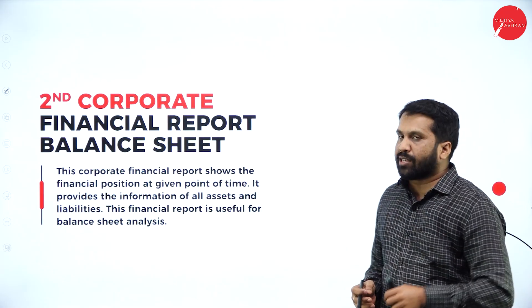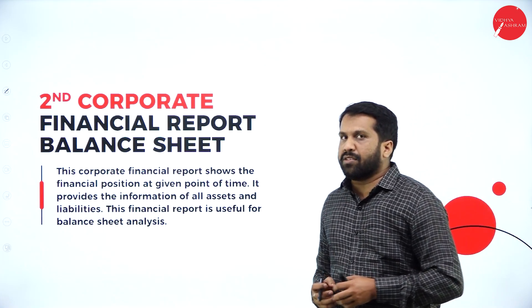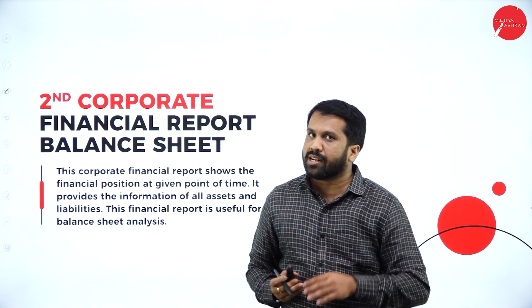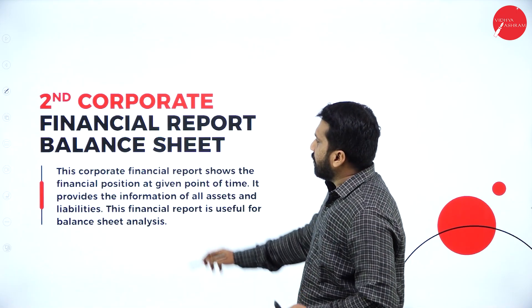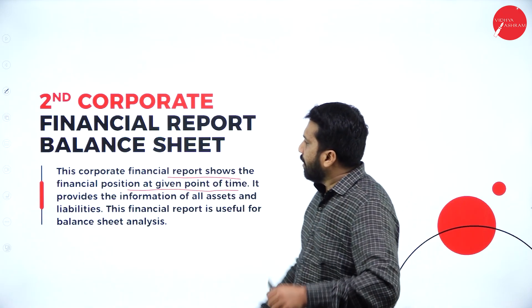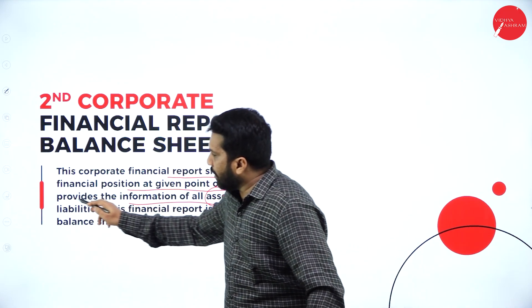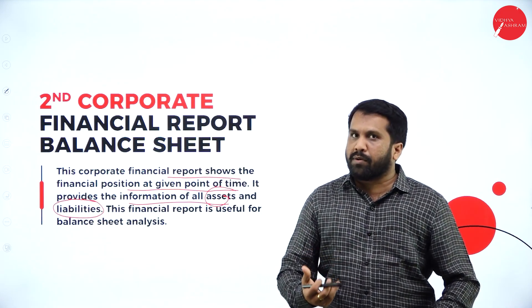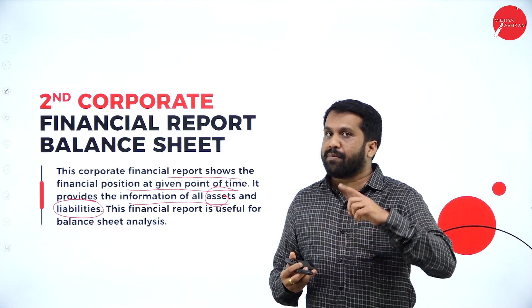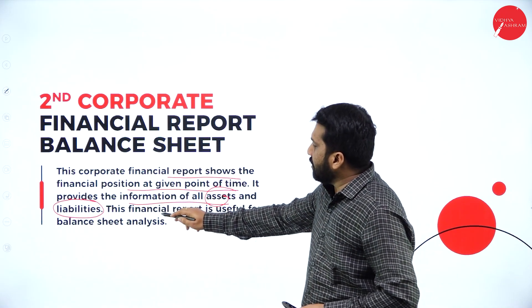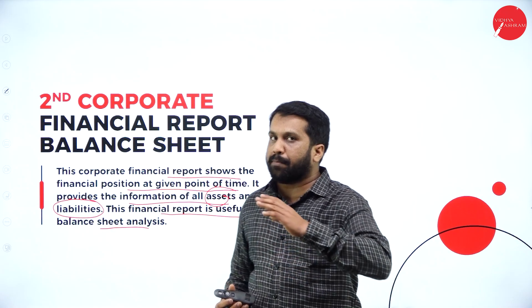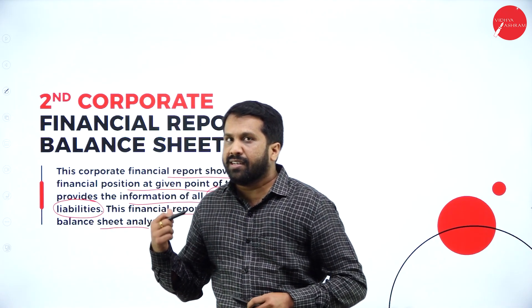The second point is the Corporate Financial Report Balance Sheet. Once you are done with your financial statement like income and expenditure, the next step is the balance sheet. You have to balance your liability with assets. The corporate financial report shows the financial position at a given point of time, providing information on all assets and liabilities. This financial report is useful for balance sheet analysis — comparing last year's balance sheet with this year's.